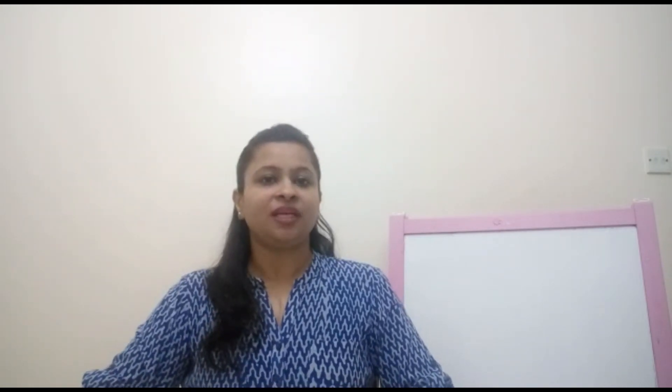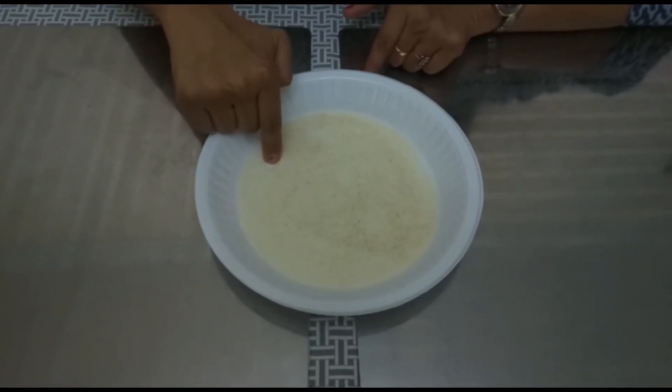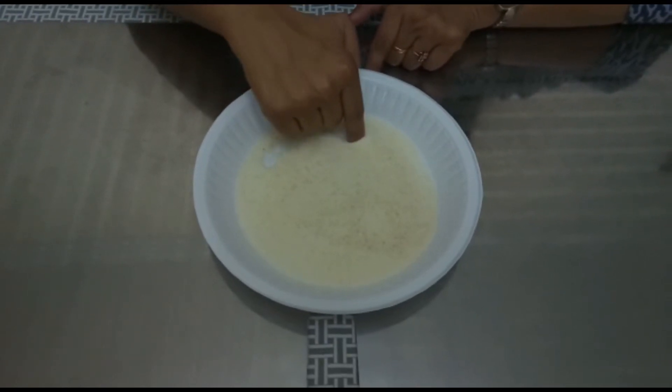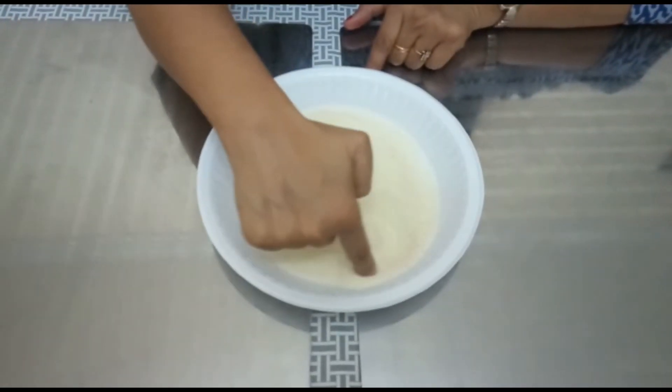Children, before you start writing on your notebook, let's do some pre-writing. For that we need a semolina tray, salt, or colorful sand. Let's do our pre-writing — start from the dot, make a curve and another curve.